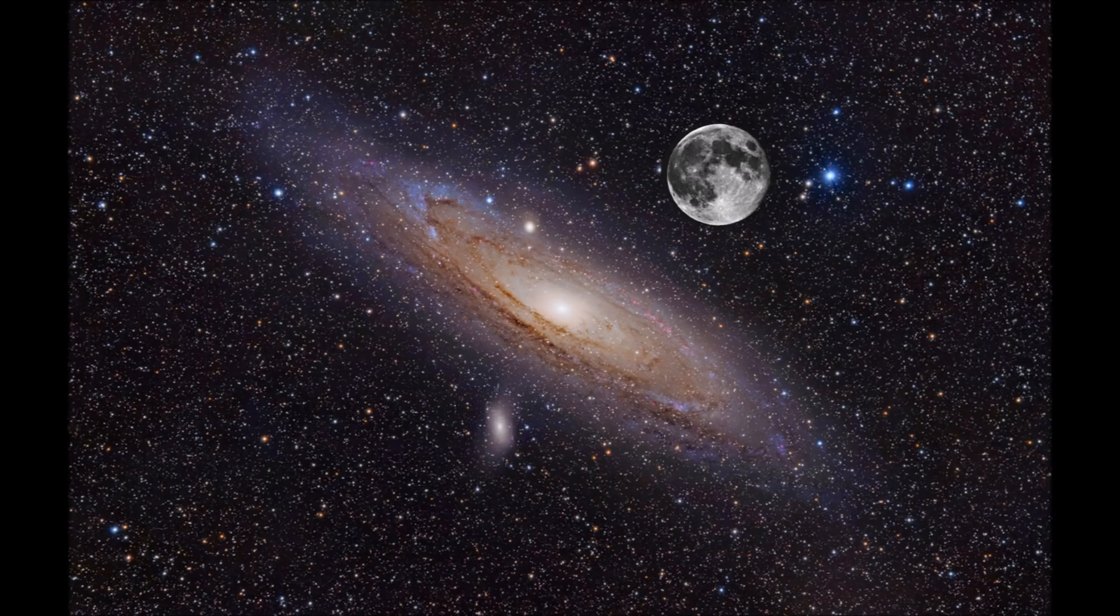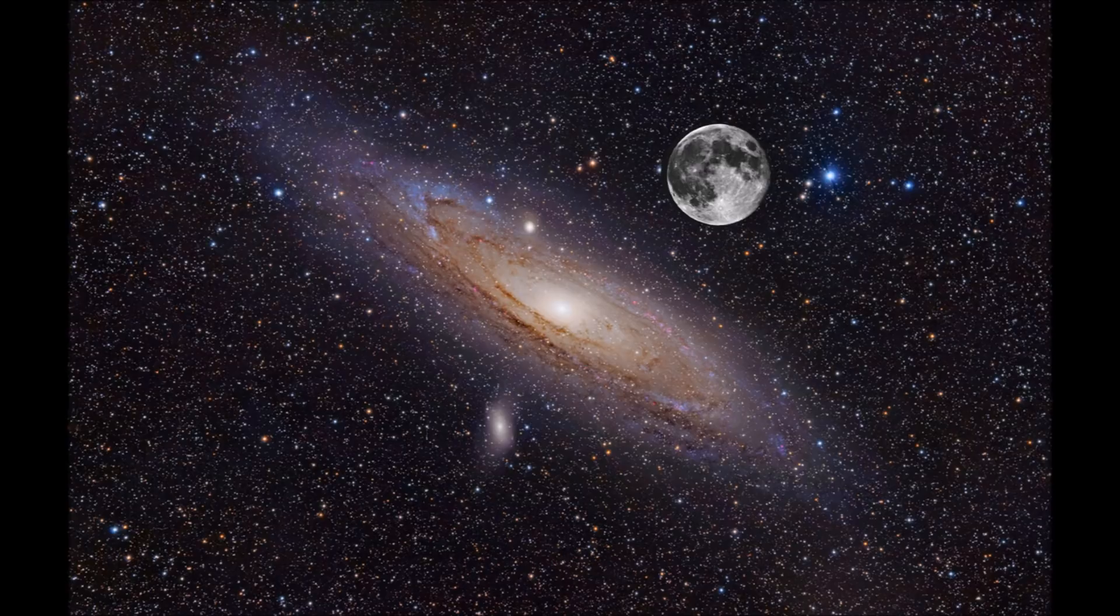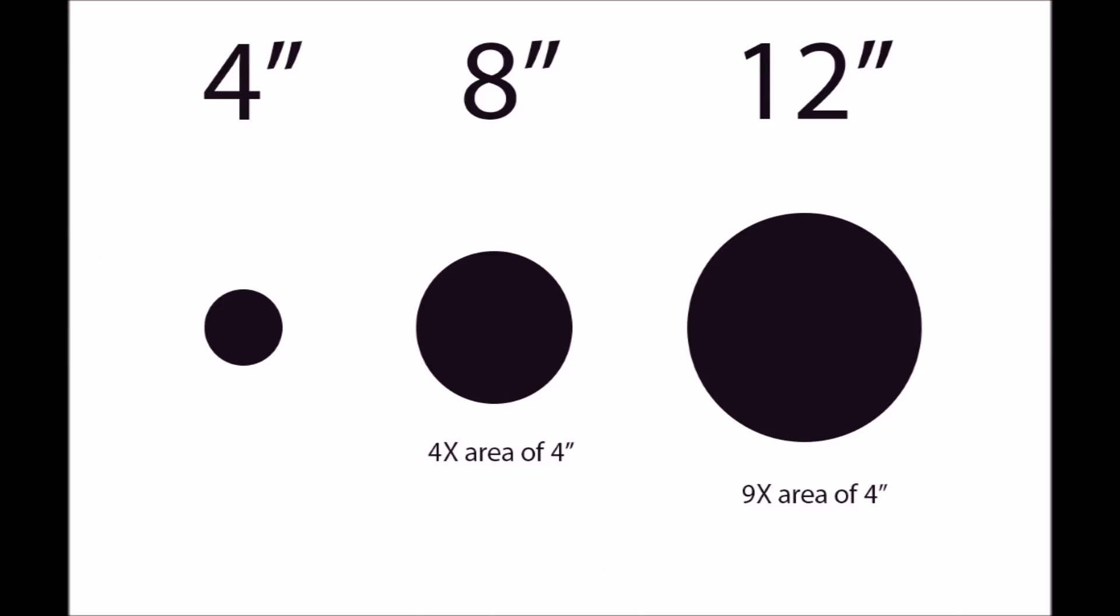So things like nebulae and galaxies, some of them can be actually larger than the full moon. What you really want is to make faint objects like nebulas and galaxies visible. And this is done by the aperture of the objective lens. Aperture is just another word for the diameter of the objective lens. The larger the aperture, the more surface area is available to collect light. So you'll be able to pick up finer details and dimmer objects.